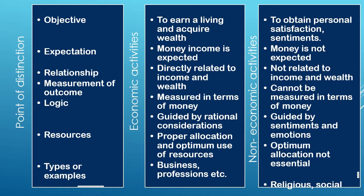Resources in economic activities have to be properly allocated with optimum use — the producer must properly use raw materials, fuel, labor, and workers in production so there is maximum output and more earnings. In non-economic activity there is no requirement for such optimum allocation. The types or examples of economic activity include business and profession, while social and religious activities are examples of non-economic activities.